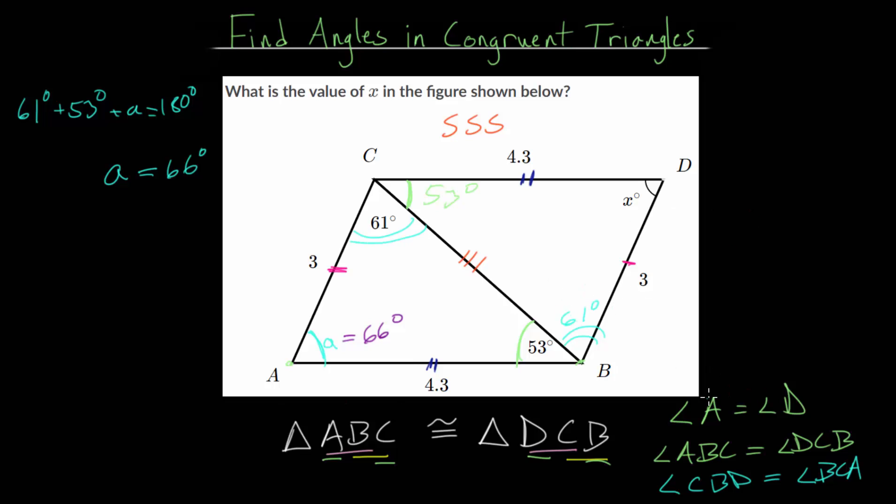We already know that angle A and angle D are equal, which means that this one here is also 66 degrees, which answers the question of what that missing value, x, was in this figure.